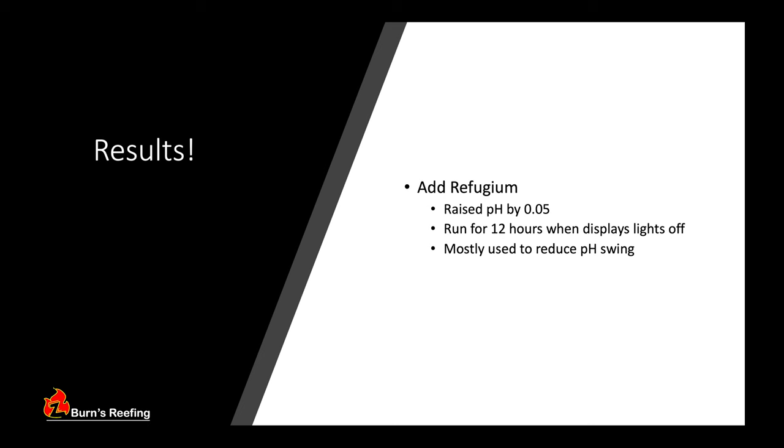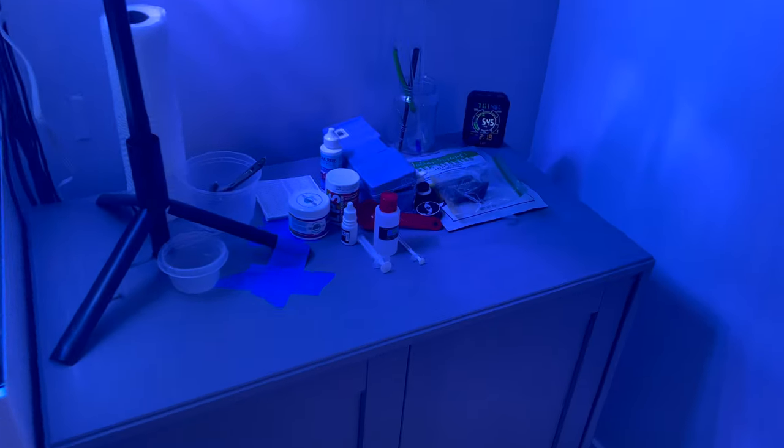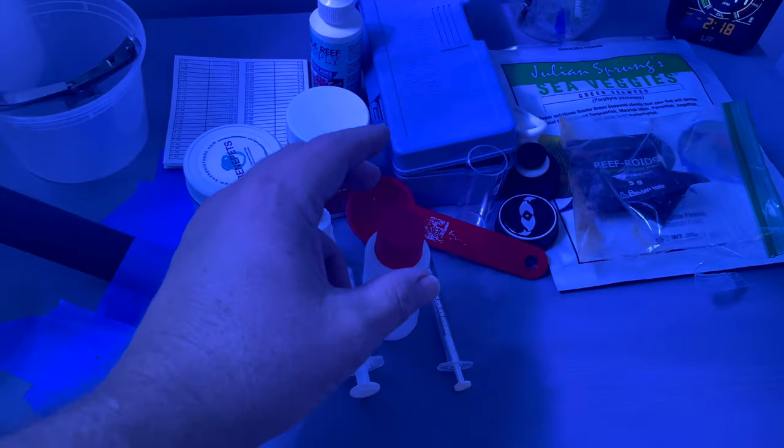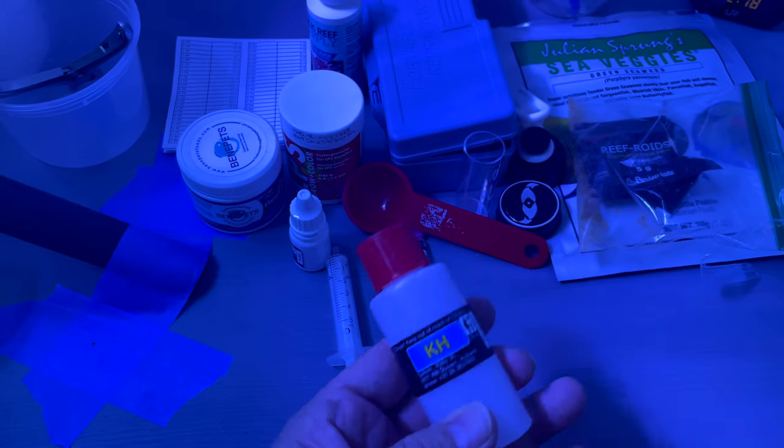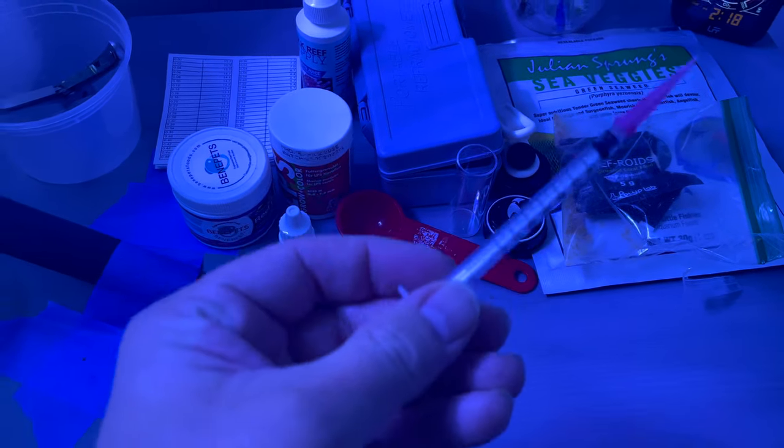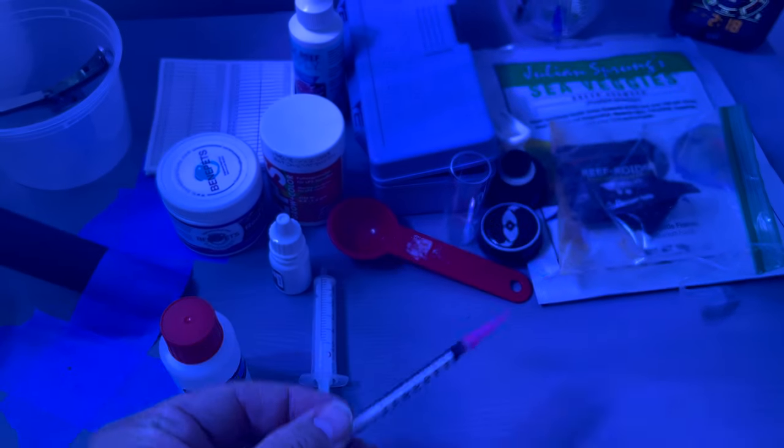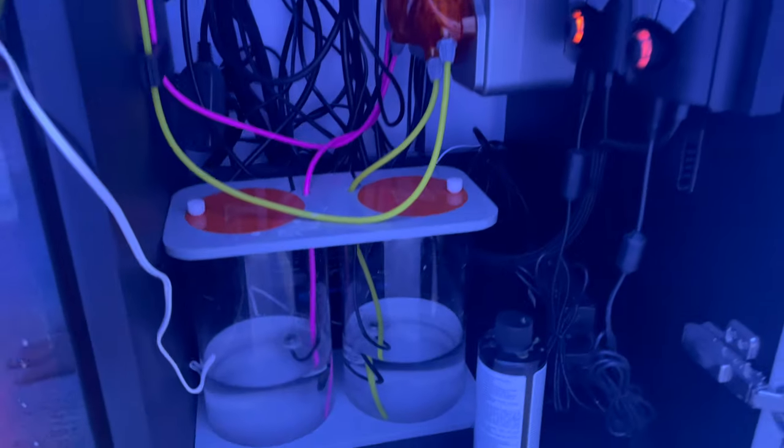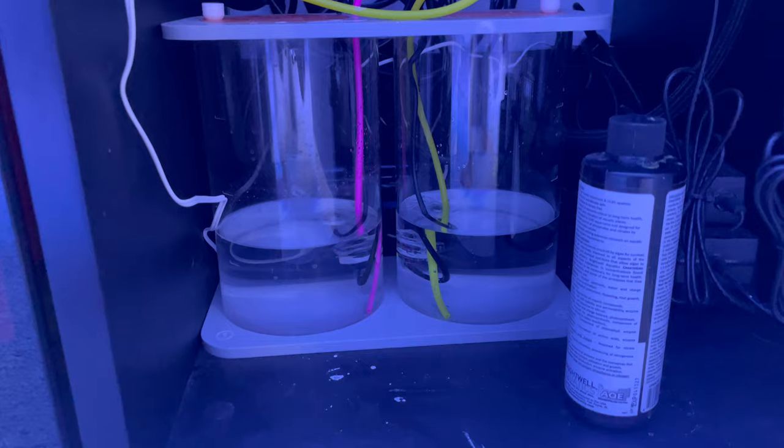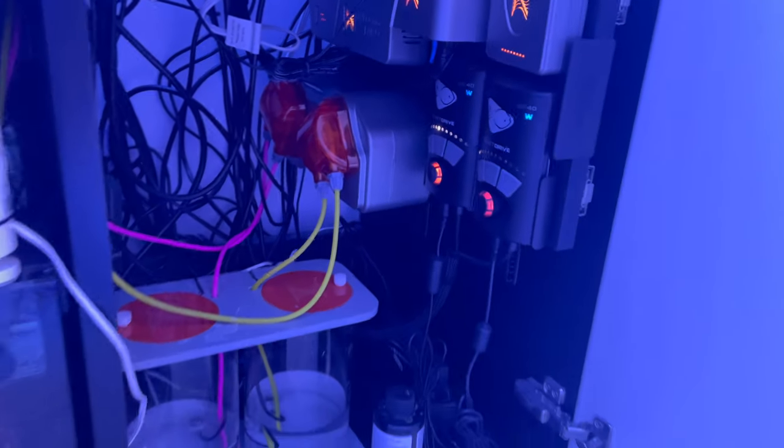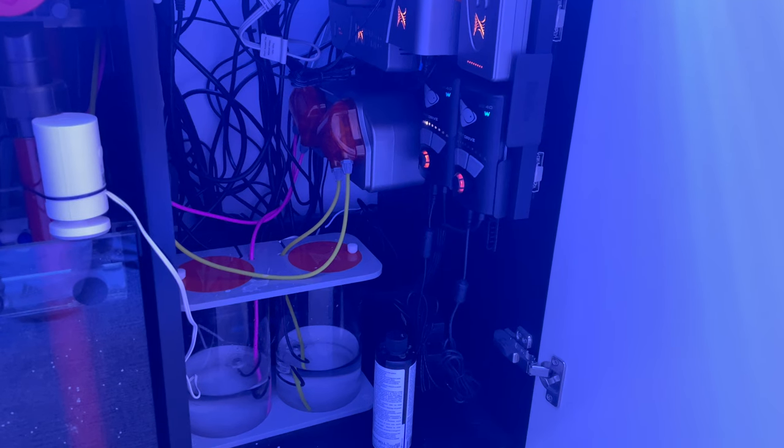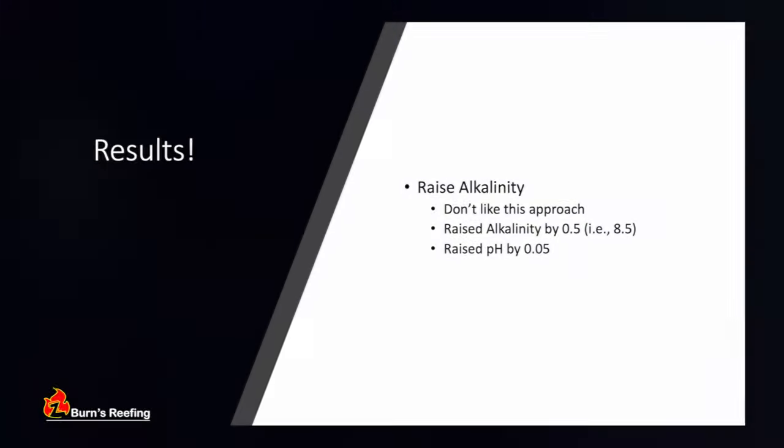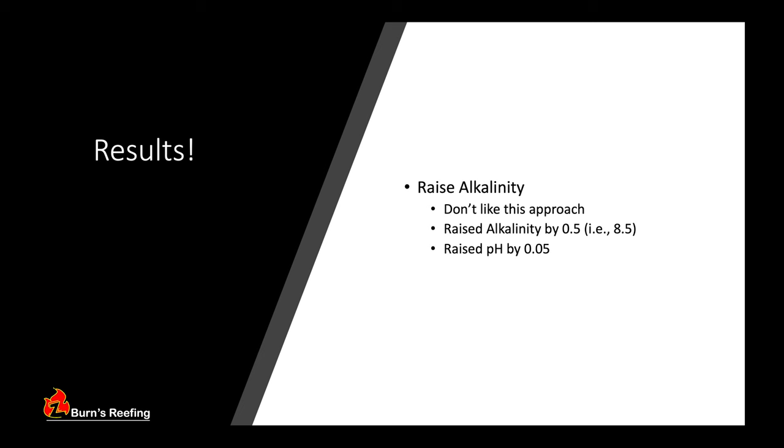Now next up, I tried raising my alkalinity a little bit. Now I test my alkalinity each night at this time. The tank's young. I've got little SPS frags. The tank is unstable when it's this young, in my opinion. So I test a lot. Now I decided to slowly raise my alkalinity from 8 to about 8.5 to see how much that would impact pH. And in summary, this is probably the least effective approach, largely because I didn't want to raise my alkalinity too high. pH seemed to increase a little bit when I raised my alkalinity, so it did work. But I think it only increased by about 0.05, if that, maybe even a little less than that.